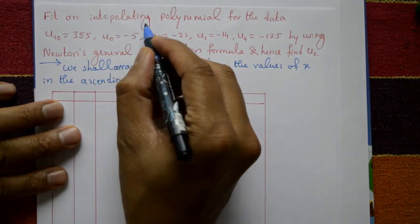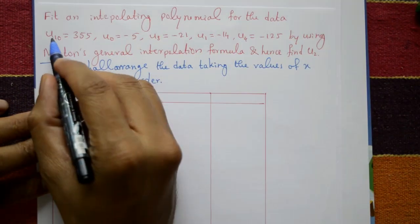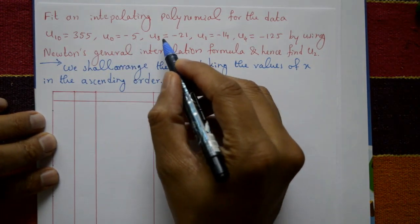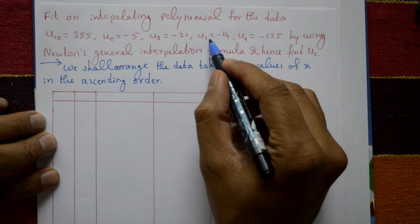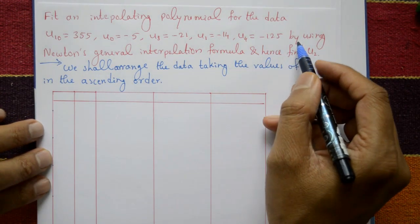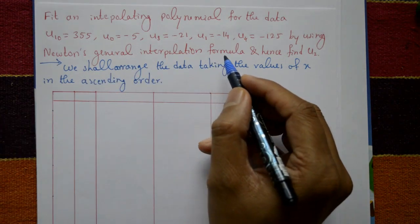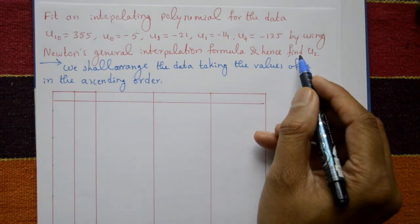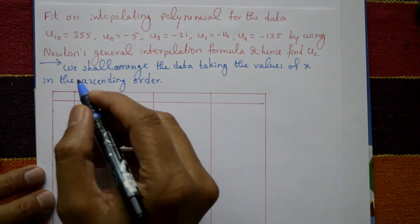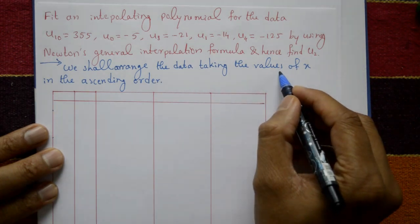Fitting and interpolating a polynomial for the data: u10 = 355, u0 = -5, u8 = -21, u1 = -14, u4 = -125, using Newton's general interpolation formula, and hence find u2.